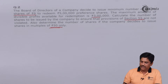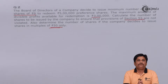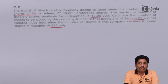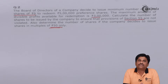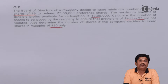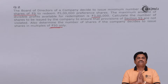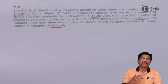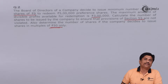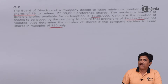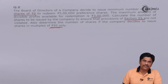Let us work out this question. While redeeming the preference shares, we will actually issue some other kind of shares, or we can use divisible profit so that the capital gets replaced. When you use divisible profit for the purpose of redemption of preference shares, you will create CRR — Capital Redemption Reserve — which can ultimately be used for a bonus issue.